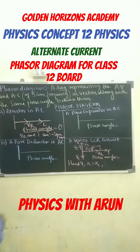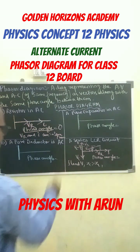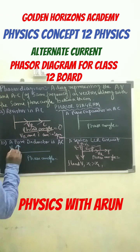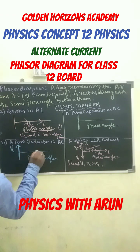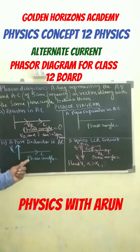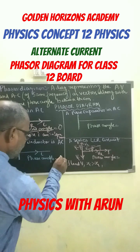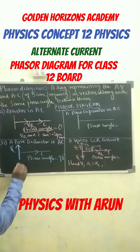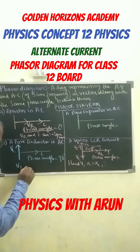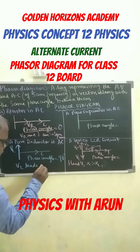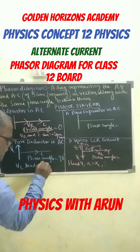Up next, here a pure inductor. So for a pure inductor, here is Vl, and here is I. Here the phase angle is 90 degrees. And here Vl leads I.